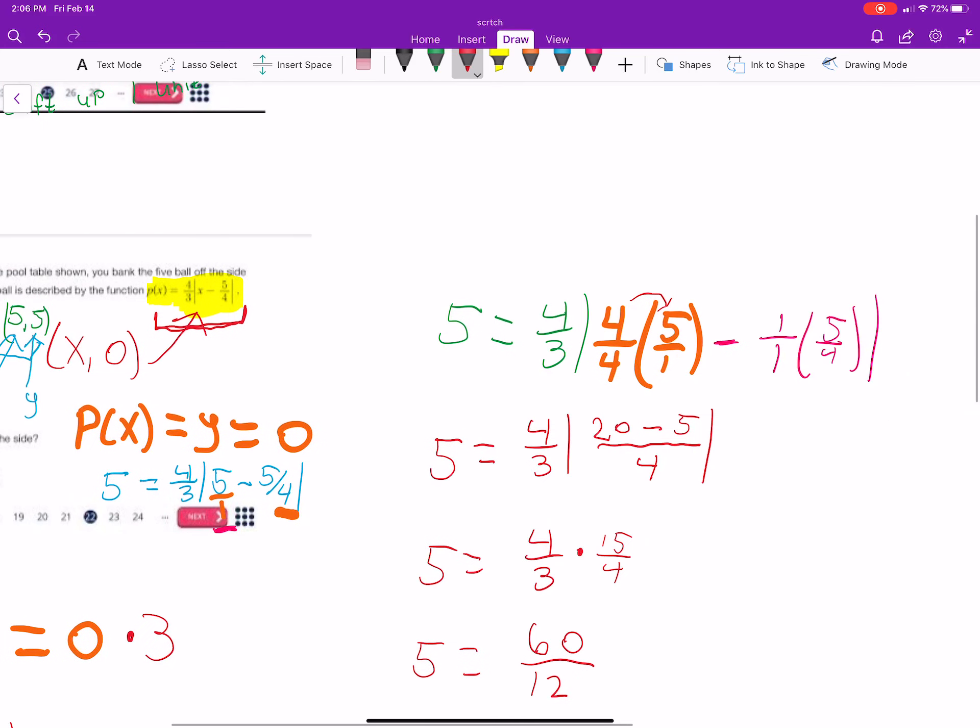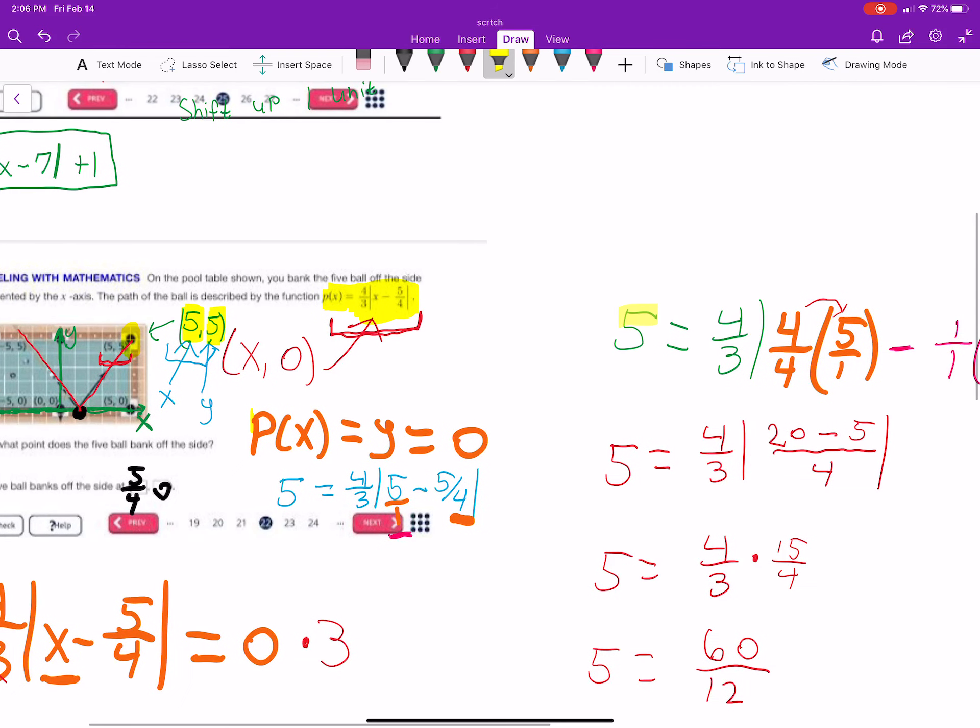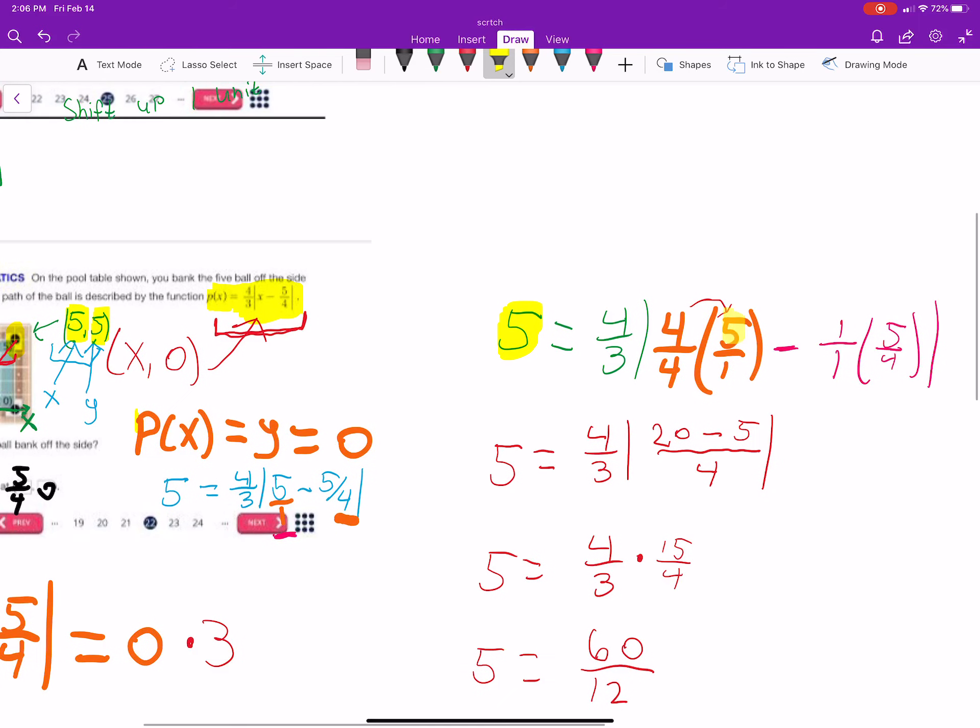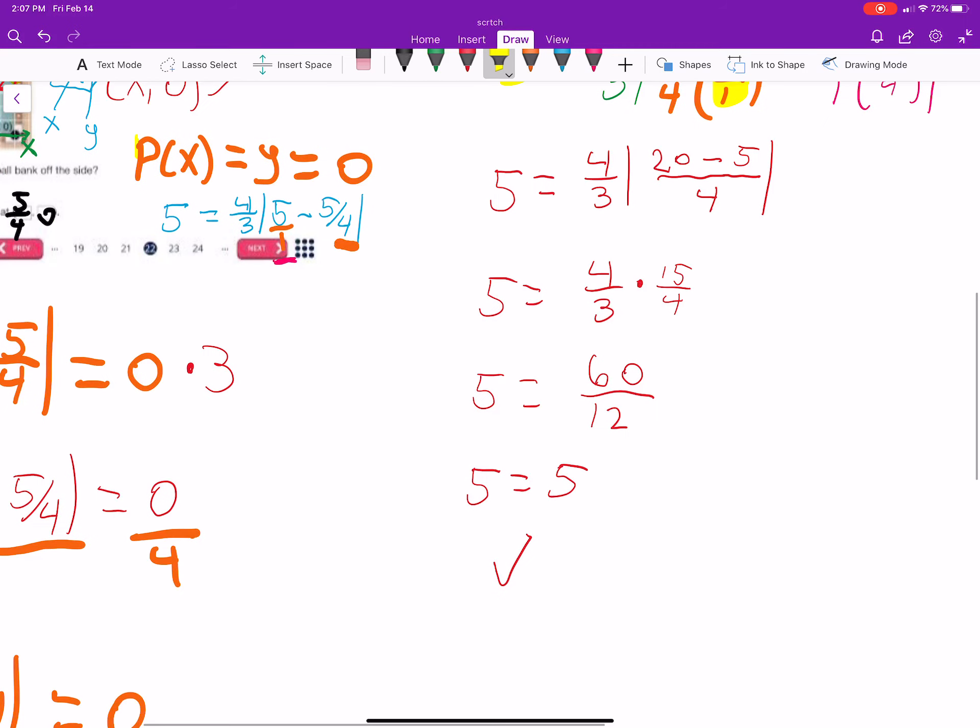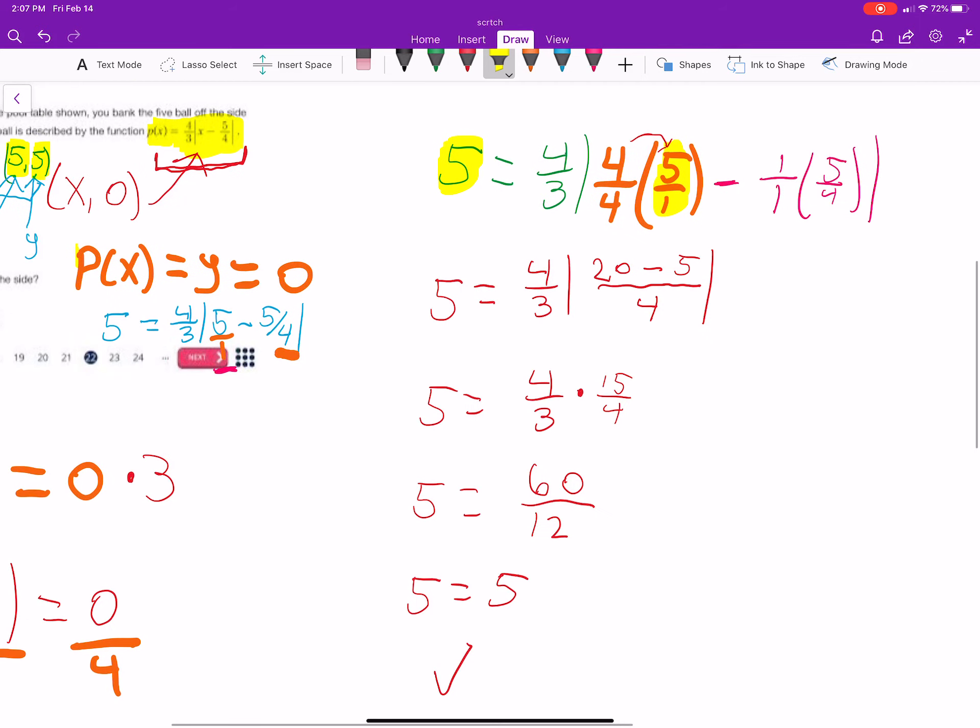And this is how we showed that. We took the fact that the pocket's at 5 comma 5, where this is an x value and this is a y value. We plugged in our y value, 5. We plugged in our x value, 5, and then we just simplified. If I got 5 equals 7, then that's not a true statement and that's not a coordinate point. But because I got a true statement, then this is true. So, hopefully, that makes at least a little sense.